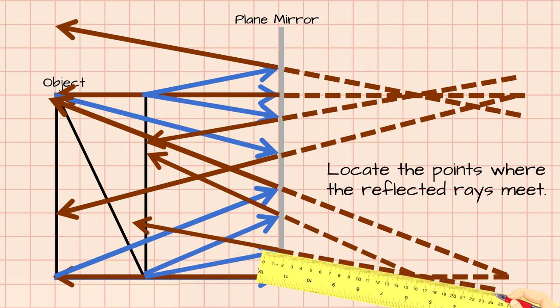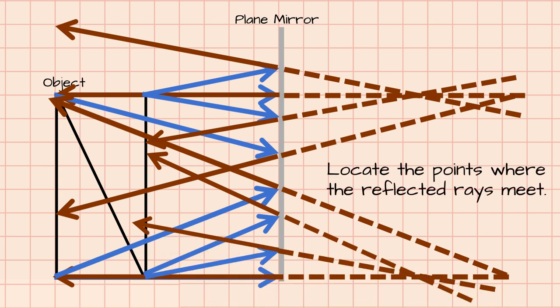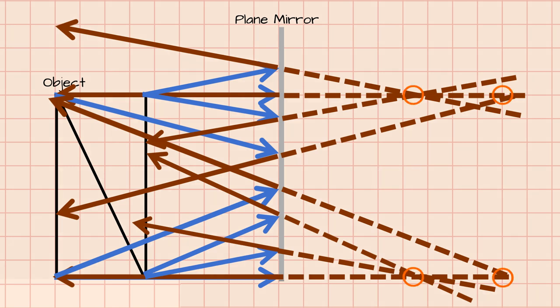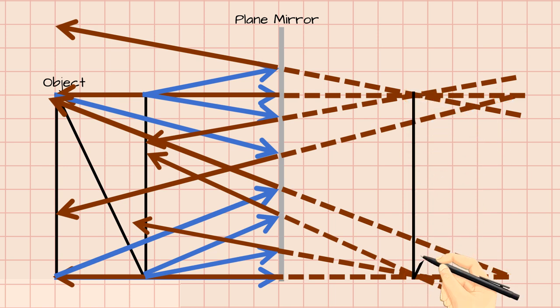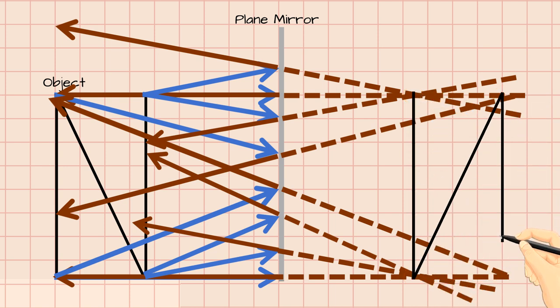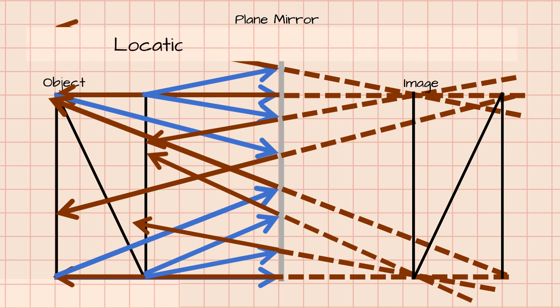Locate the points where the reflected rays meet. These points indicate the location of the image of the object. Draw the image of the object. Describe the image in terms of the location, orientation, size, and type of the image.